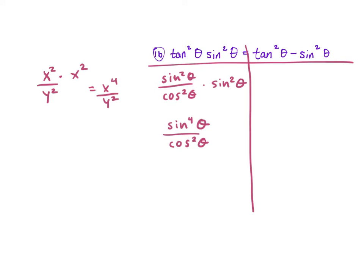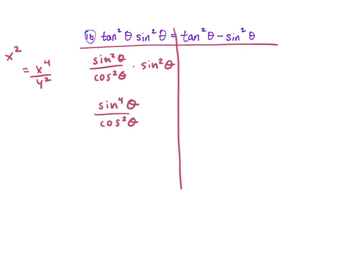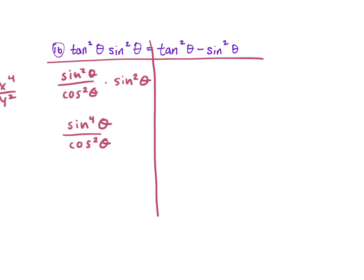This looks solid. Let's work on the right side to see if we can get it to look like sine⁴ θ over cosine² θ. Change tangent on the right side to sine² over cosine² as well. Our left-side answer is in terms of sine and cosine, so change everything on the right to sine and cosine.